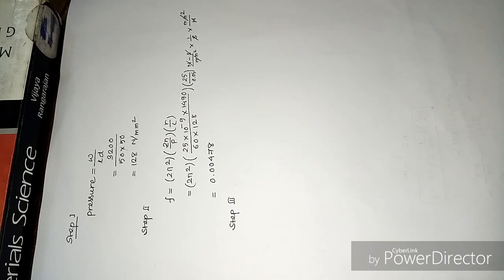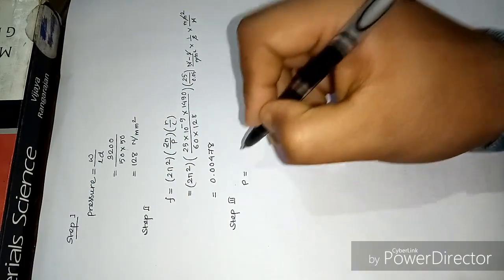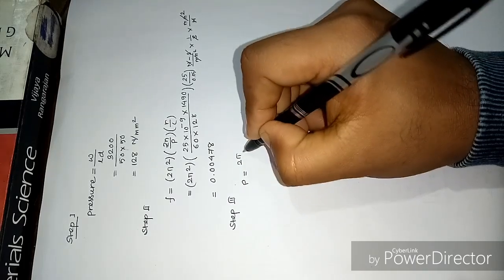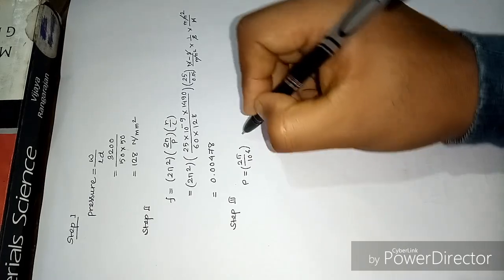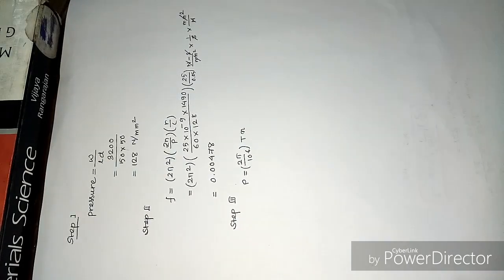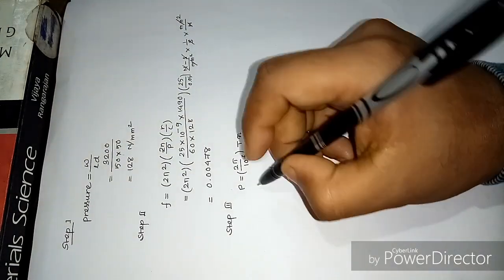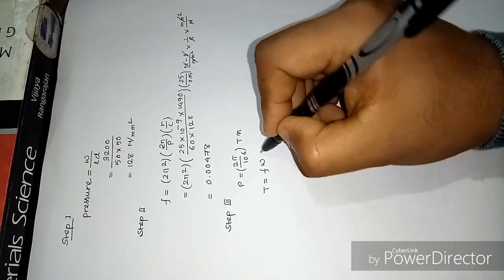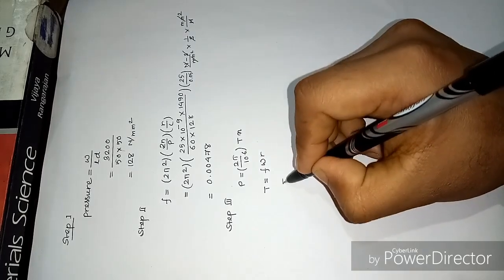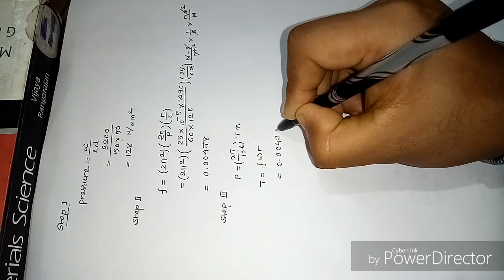Step 3: determine the frictional loss. The formula to determine frictional loss from the design data handbook is 2 pi by 10 to the power 6 into T into N. We have to calculate the torque. The torque formula is coefficient of friction times weight times R. Coefficient of friction we have determined is 0.00478.